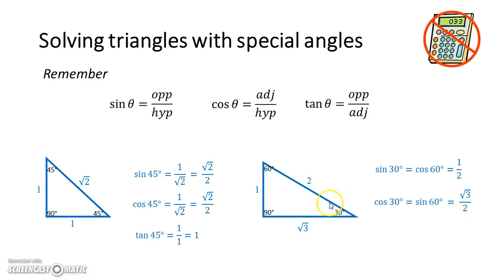Now we can think about tan. Tan of 30 is opposite over adjacent, one over root three. And tan of 60 is opposite over adjacent root three over one.